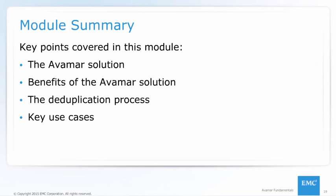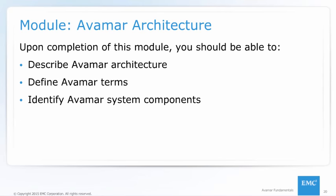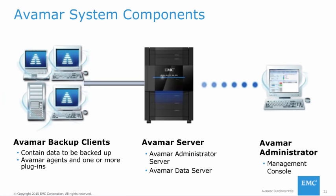This module covers Avamar architecture, terms, and system components. The three major components of an Avamar system are the Avamar server, Avamar backup clients, and the Avamar Administrator. The Avamar server stores client backups and provides essential processes and services required for client access and remote system administration. Avamar Administrator server and the Avamar data server run on the Avamar server. Avamar client software runs on each computer or network server that is being backed up, and each client consists of a client agent and one or more plugins. Avamar Administrator is a user management console software application used to remotely administer an Avamar system from a supported Windows or Linux computer.